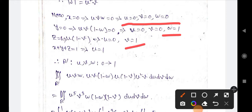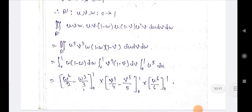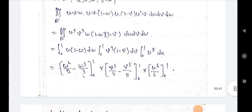The limits become: u from 0 to 1, v from 0 to 1, w from 0 to 1. Solving the transformed triple integral I', with uvw · uv · (1−uv)(1−u) u²v du dv dw, putting in the values of x, y, z gives this expression.